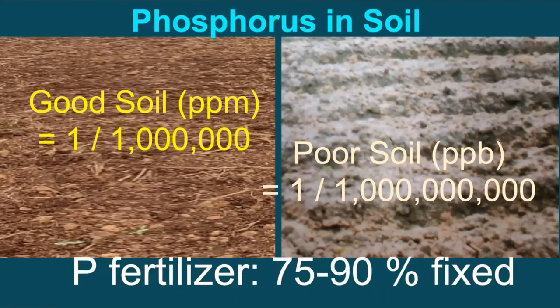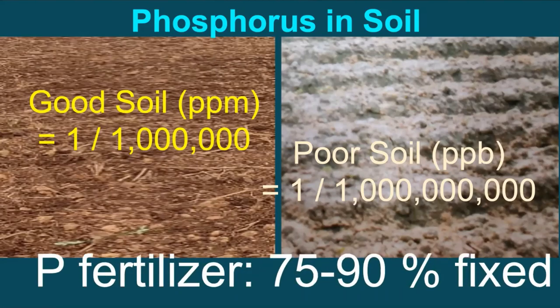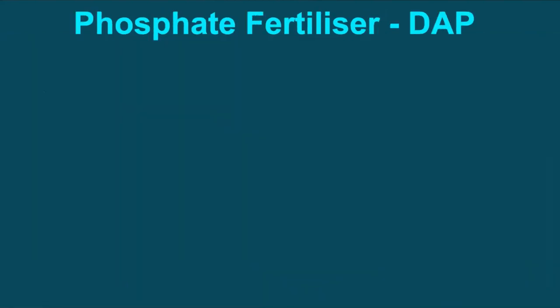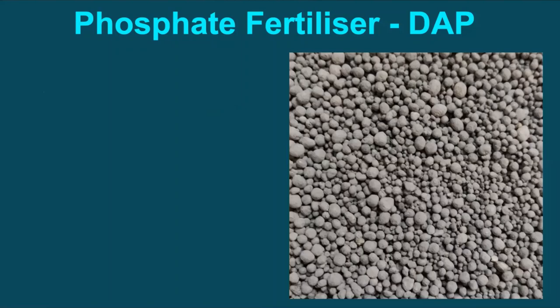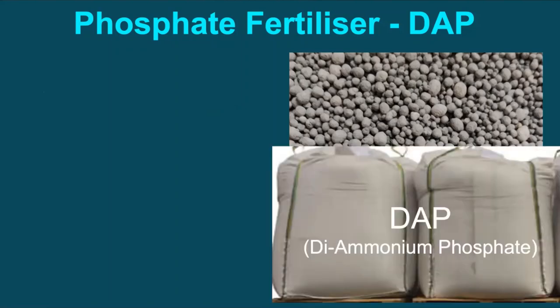About 75 to 90% of applied phosphate fertilizers becomes insoluble, hence unavailable to crops. Among the various phosphatic fertilizers, DAP is the world's most widely used fertilizer. The global demand for DAP is about 30 million, that is 3 crore tons a year.